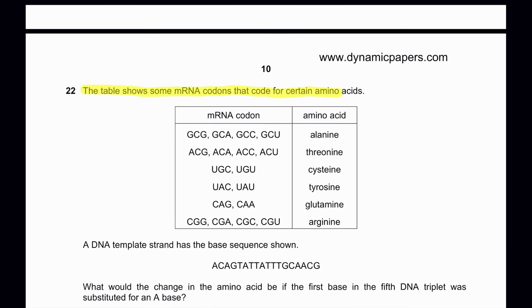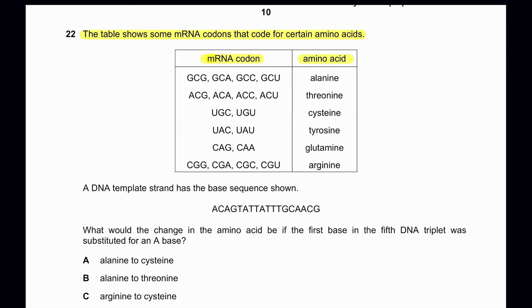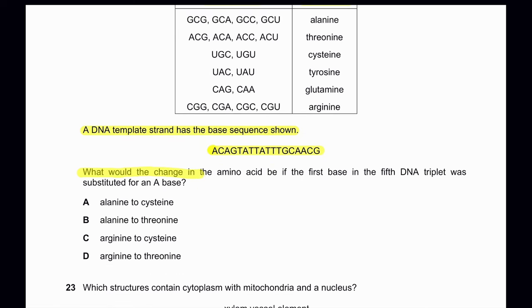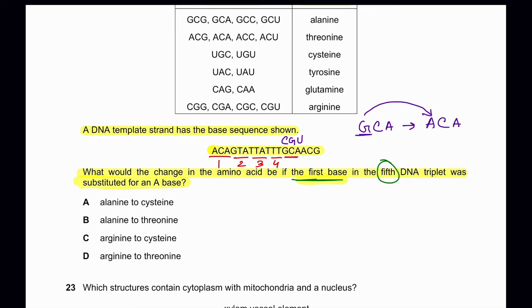Question 22: The table shows some mRNA codons and their corresponding amino acids. The DNA template strand base sequence is given. What would the change in amino acid be if the first base of the fifth DNA triplet was substituted for an A base? The fifth DNA triplet is GCA, which produces mRNA codon CGU. When G is substituted by A, the triplet becomes ACA, which produces mRNA codon UGU. CGU codes for arginine and UGU codes for cysteine. So arginine would be converted to cysteine by this mutation. C is the correct answer.